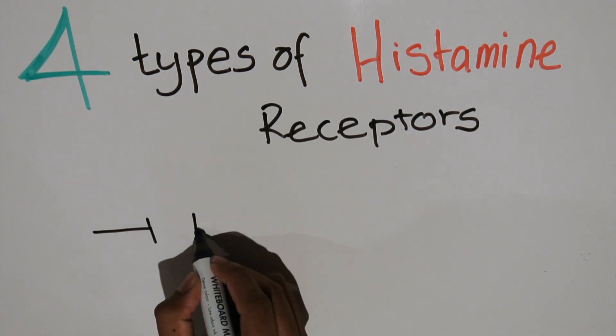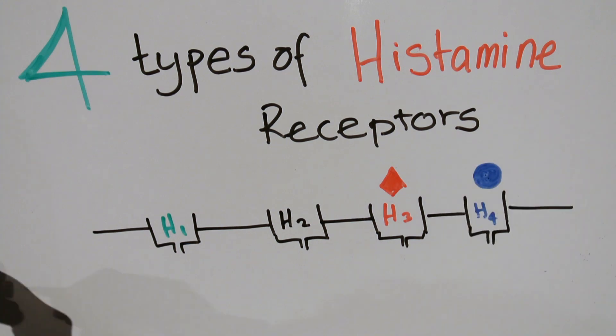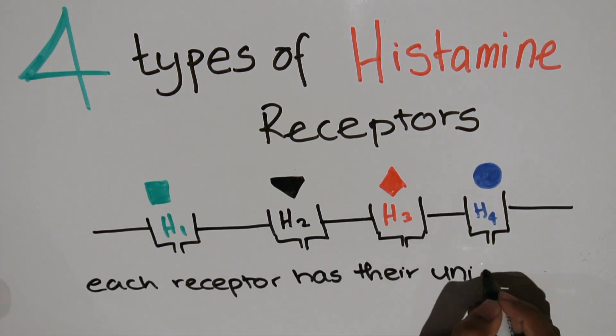At this moment, there are four classes of histamine receptors: H1, H2, H3 and H4, which histamine can bind to. Hence there are different classes of antihistamines.